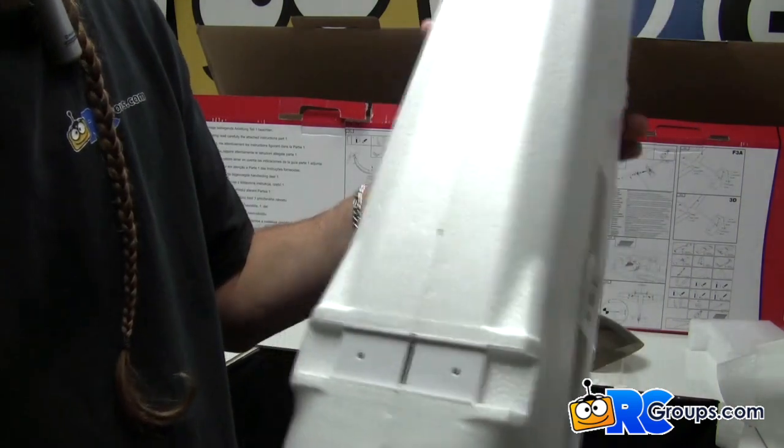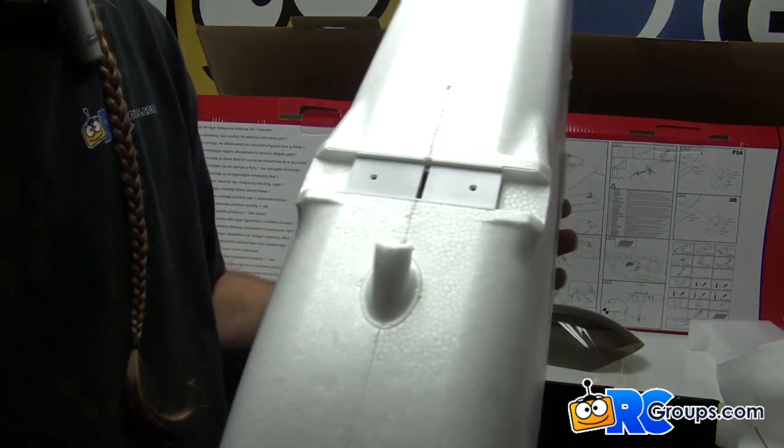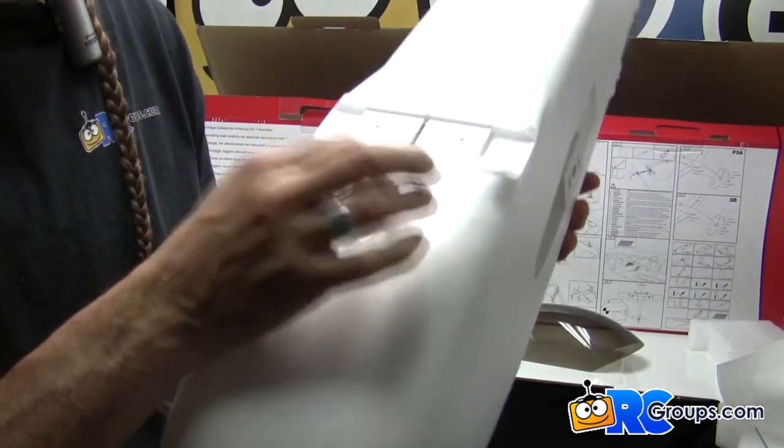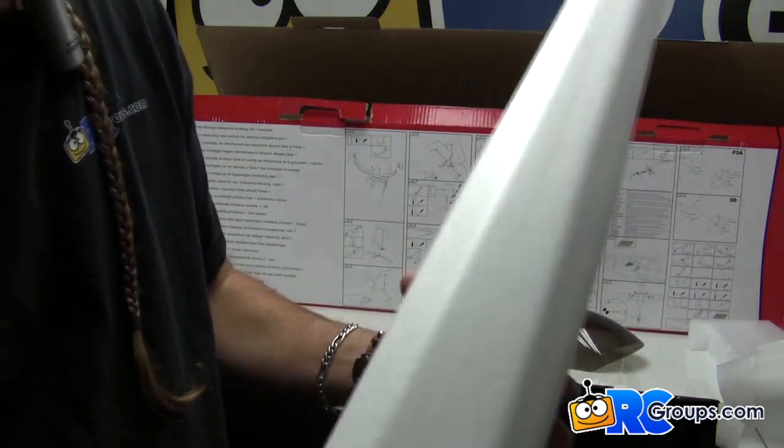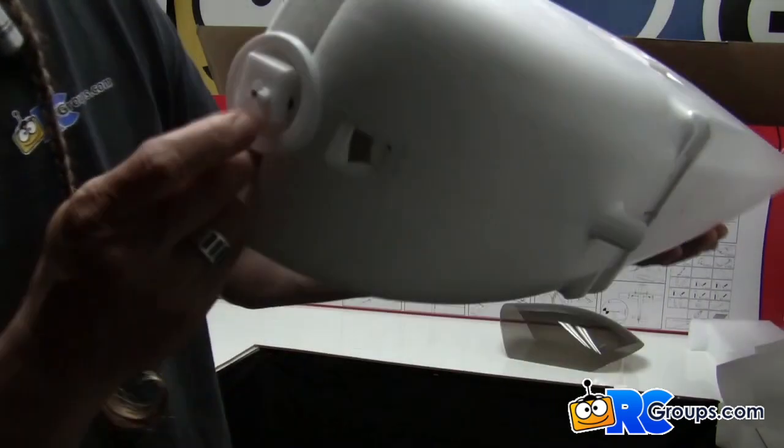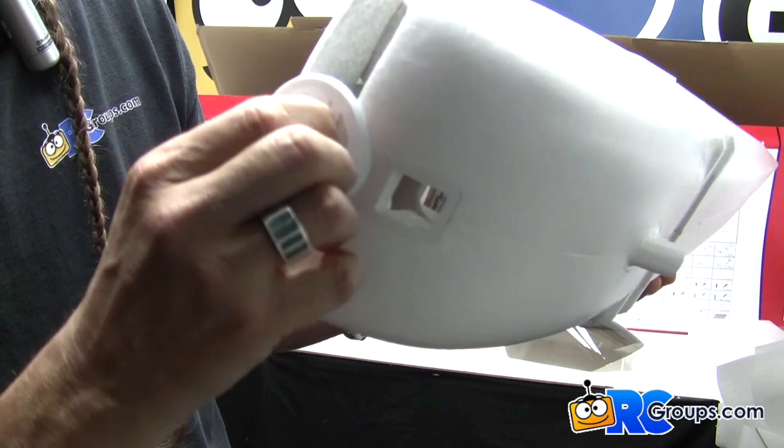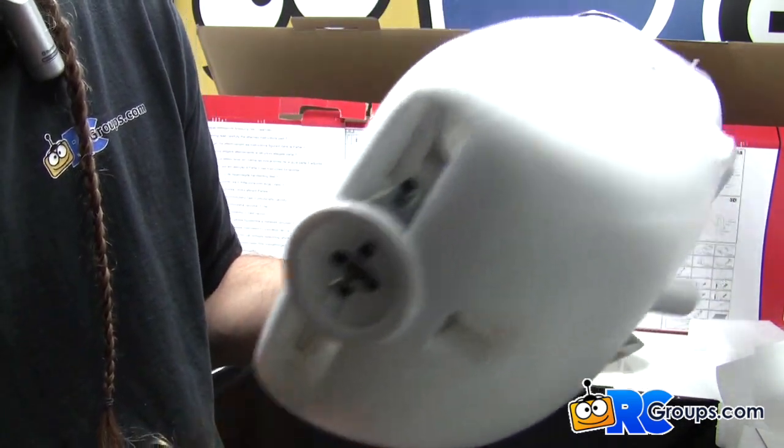Let's look at the bottom. This is where your landing gear is going to go. Nice little faux exhaust outlet there. And then there's foam right here where the motor is poking out already installed.